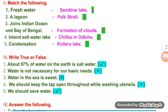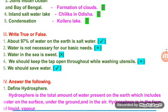True or False? About 97 percent of water on the earth is salt water - True. Water is not necessary for our basic needs - False. Water in the sea is salty - False. We should keep the tap open throughout while washing utensils - False. We should save water - True.